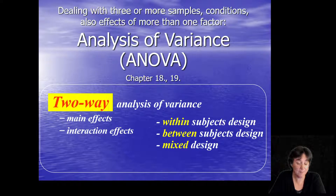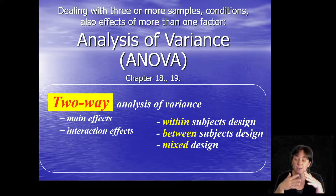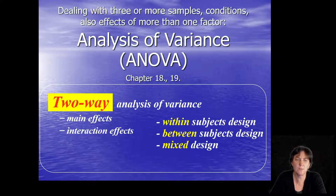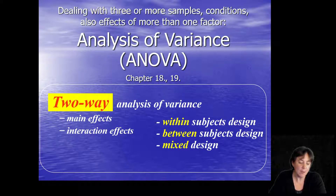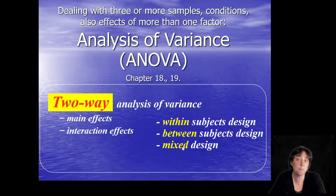Our next topic is the two-way analysis of variance, where we want to test not just a single effect but mainly the interaction of two different effects — very similar in logic to when we did the 2×2 chi-square test. When testing two effects simultaneously, we have to acknowledge that either both are within-subjects design, both are between-subjects design, or they're a combination — then we call it a mixed design.